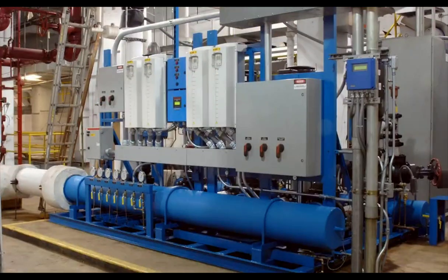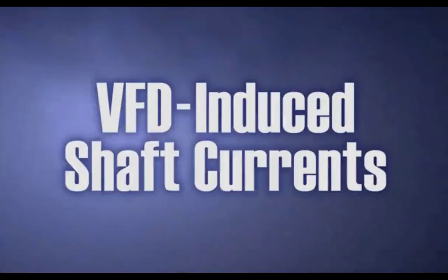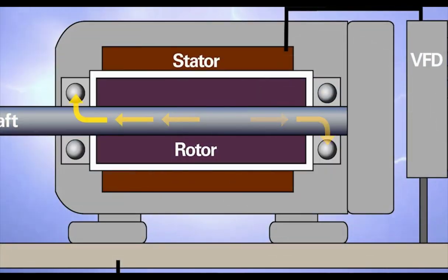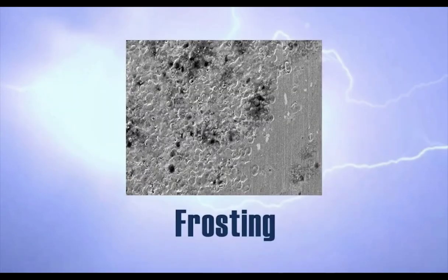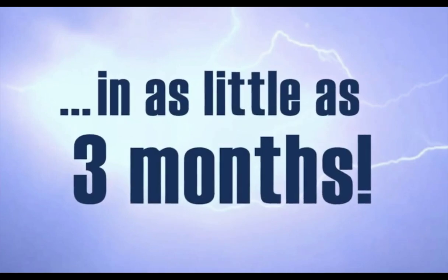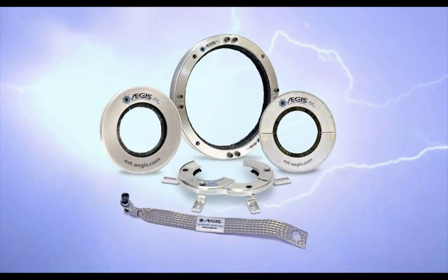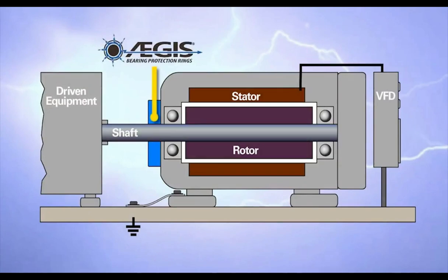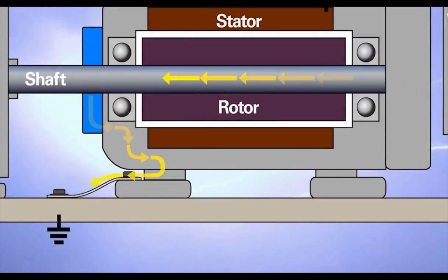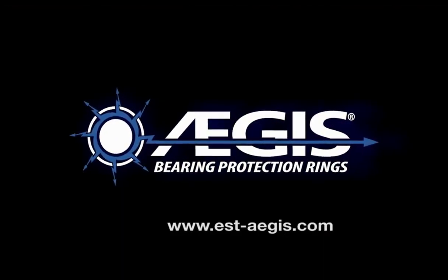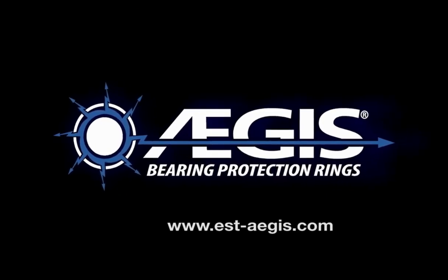VFDs can save 30% or more in energy costs. But VFDs can also damage motor bearings. Without shaft grounding, VFD-induced voltages can discharge through motor bearings causing damage such as pitting, frosting, and fluting, and unplanned motor failure in as little as three months. Revolutionary new EGIS bearing protection rings provide proven long-term protection against VFD-induced bearing damage. By channeling harmful shaft currents away from bearings and safely to ground, EGIS rings ensure that motors last for the L-10 life of their bearings. To protect motors from bearing damage, prevent process downtime, and secure VFD energy savings, specify EGIS rings.